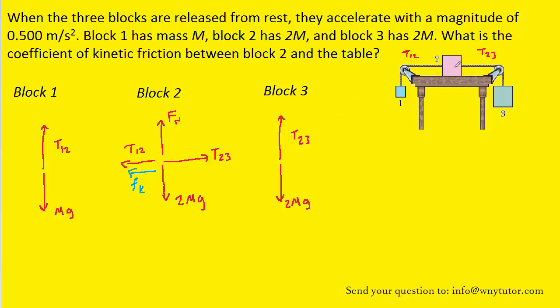Notice that we've pointed it to the left, and the reason is that block two is being pulled to the right. How do I know that? Well, we know that the mass of block three is 2m, whereas the mass of block one is only 1m. So overall, block three is going to pull this whole system to the right, and that's going to cause block two to be dragged to the right. Therefore, the kinetic frictional force points opposite to the direction of that motion.